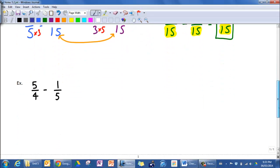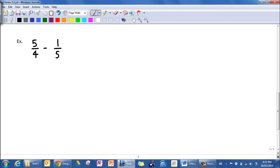All right, let's do one more example. Okay, let's try this example. We've got five-fourths minus one-fifth. So let's find some multiples. Multiples of four include four, eight, twelve, sixteen, and twenty.